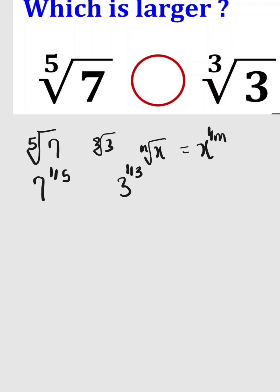In order to determine which of these two values is larger, we can multiply both powers by the product of the denominators, which is 15. So we have 7 to the 1/5 multiplied by 15, and the same thing is done to 3 to the power of 1/3 multiplied by 15.